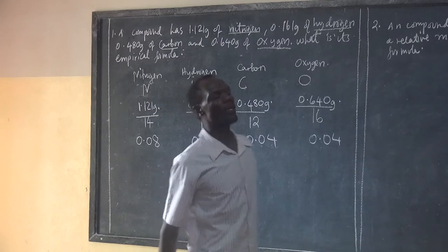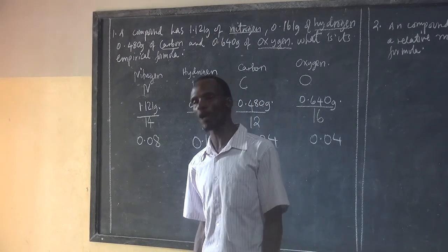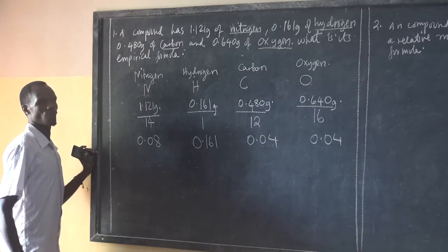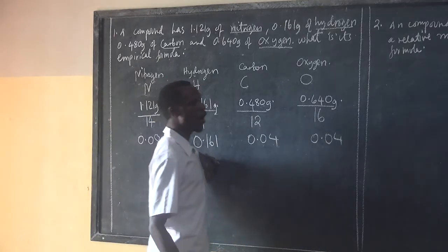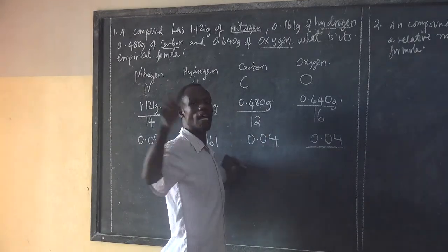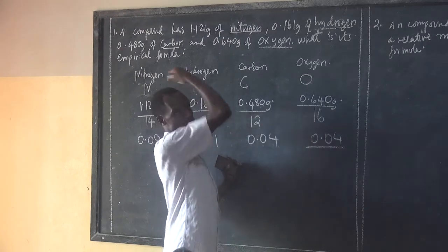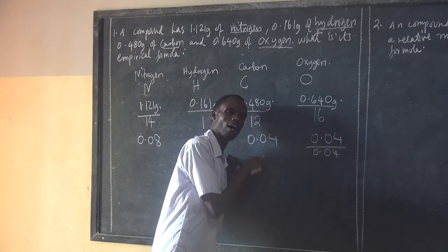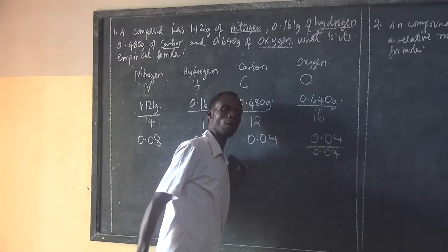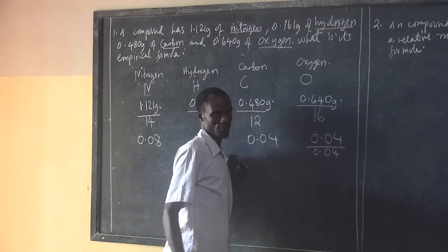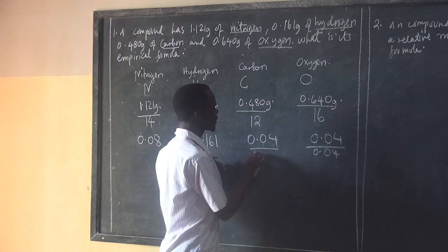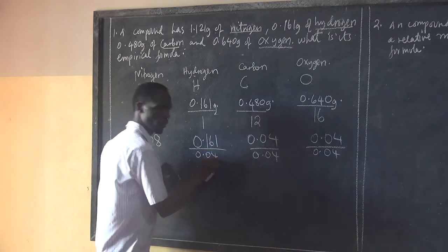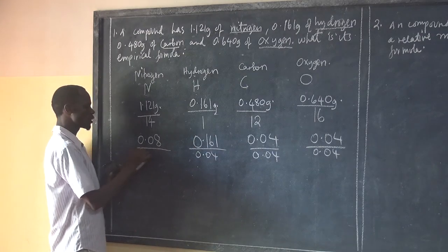The next step is to find out which one is the smallest number among those results. The smallest number is 0.04. Now we divide all the numbers we have got by the smallest number, 0.04.